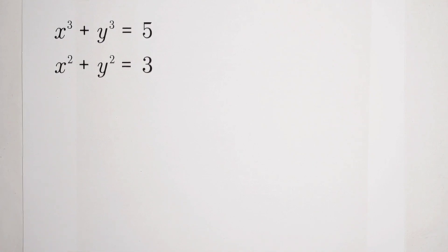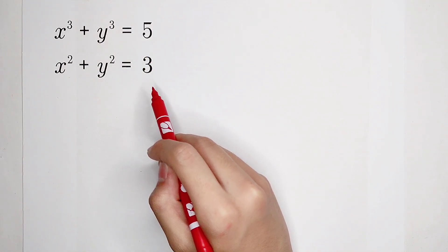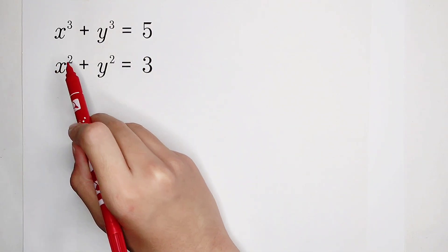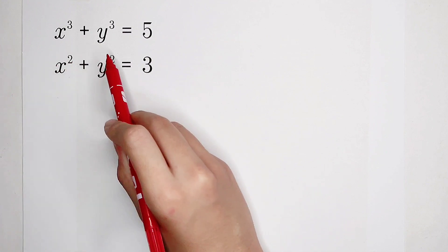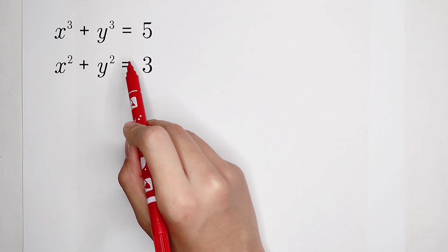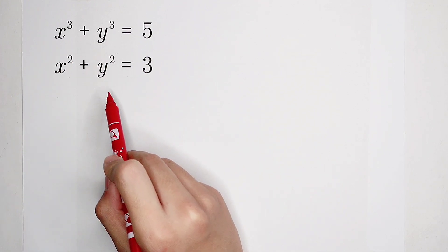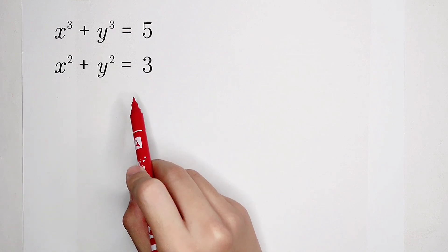Welcome back to MathWinno. Solve this system of equations: x cubed plus y cubed equals 5, and x squared plus y squared equals 3.